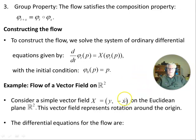We're going to have a look at an example now in two-dimensional Euclidean space. Example: flow of a vector field on R^2. Consider a simple vector field X equals (y, -x) on the Euclidean plane R^2. Notice the y component is the negative of the x and the x component is y, the y value. That'll affect the direction. You'll see this when I show you the diagram later. This vector field represents rotation about the origin.